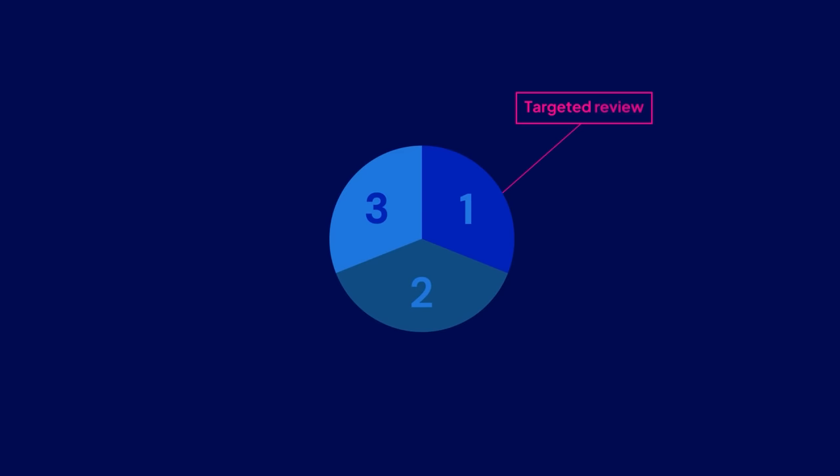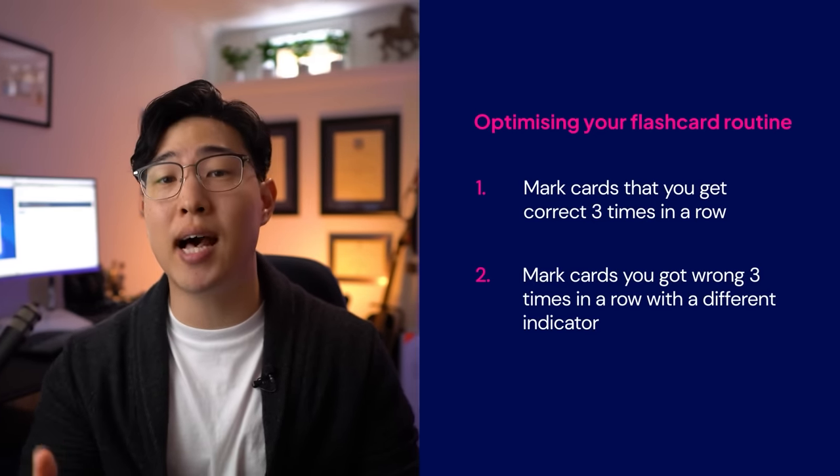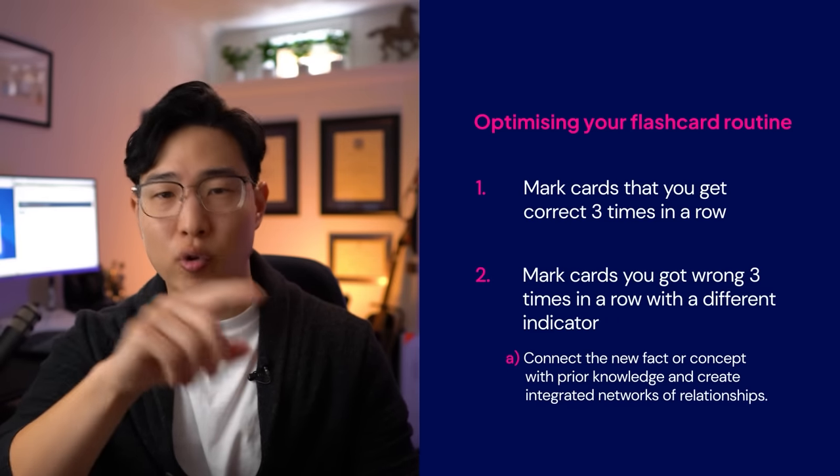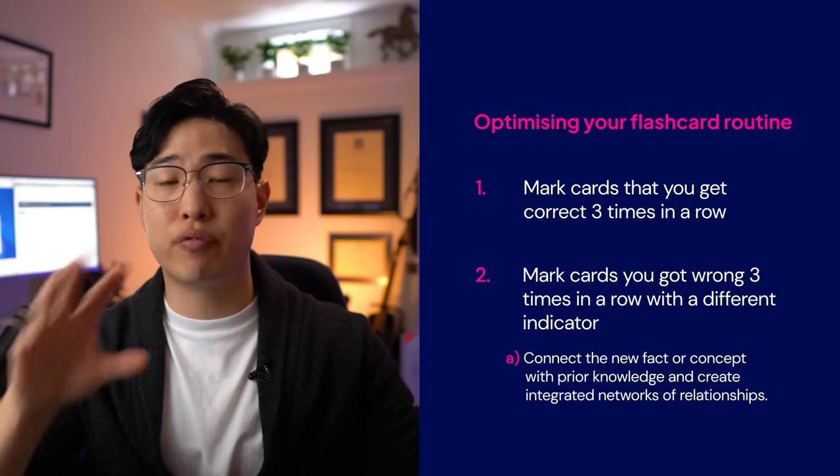In your next long study session, we're going to have a list of flashcards that we got correct three times in a row and a list of flashcards that we got incorrect three times in a row. At the beginning of this long study session, we're going to do our targeted review. Start with the flashcards you got wrong three times in a row. These flashcards are going to continue to be a problem for you, so it's not worth it to just leave them in your deck and continue to repeat them — it's just going to clog up your system. Spend five to ten minutes per card to go a little bit deeper and try to connect that fact or concept with your prior existing knowledge, other parts of the topic, or create analogies — we're going to try to build more of a network around this.